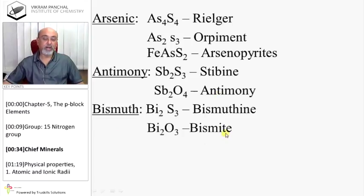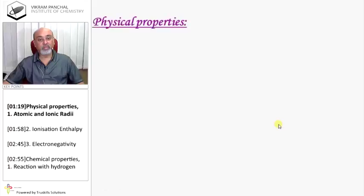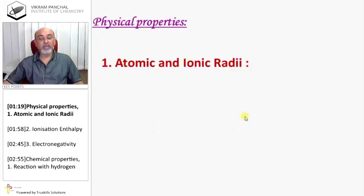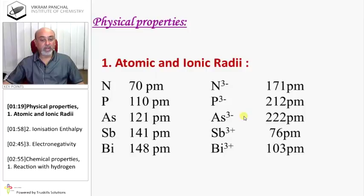Physical Properties: Atomic and Ionic Radii. Nitrogen to Bismuth, from top to bottom in group as number of orbits increased, atomic radius increases. Nitrogen, phosphorus, and arsenic show negative valency. Antimony and bismuth are positive. So from N3- to As3- ionic radius increased, and Sb3+ to Bi3+ again ionic radius increases.